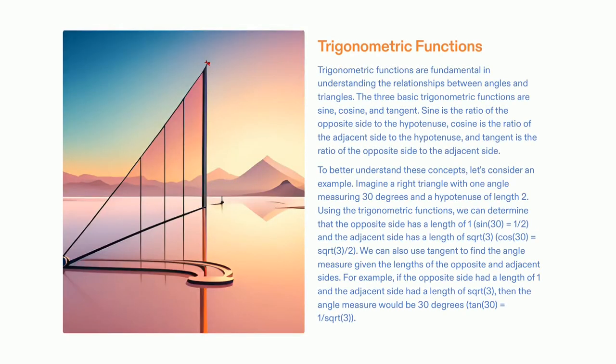Trigonometric functions provide us with great insight into the relationships between angles and shapes. They allow us to find the lengths of the sides and angle measures of shapes like triangles, using the relationships between sine, cosine, and tangent.